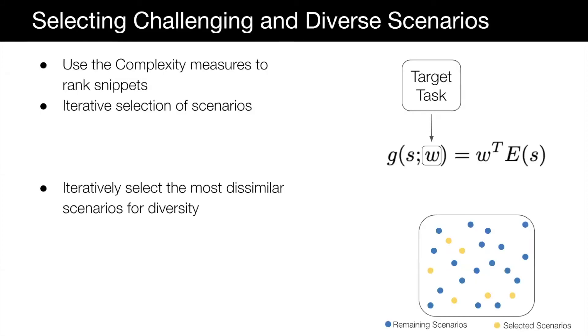In order to select a set of challenging traffic scenes, we use a weighted sum of the complexity measures to rank the scenarios with respect to each goal task. Then, we iteratively select the most interesting scenario alternating between the tasks. Finally, we select an additional diverse set of scenarios to complete our data selection.